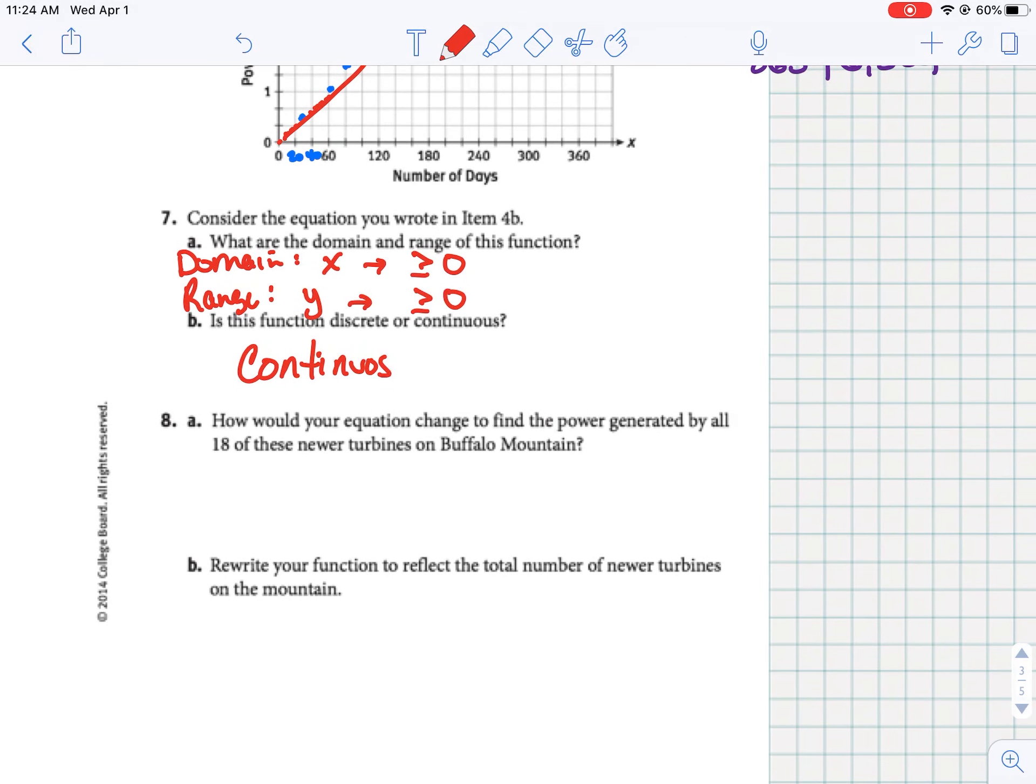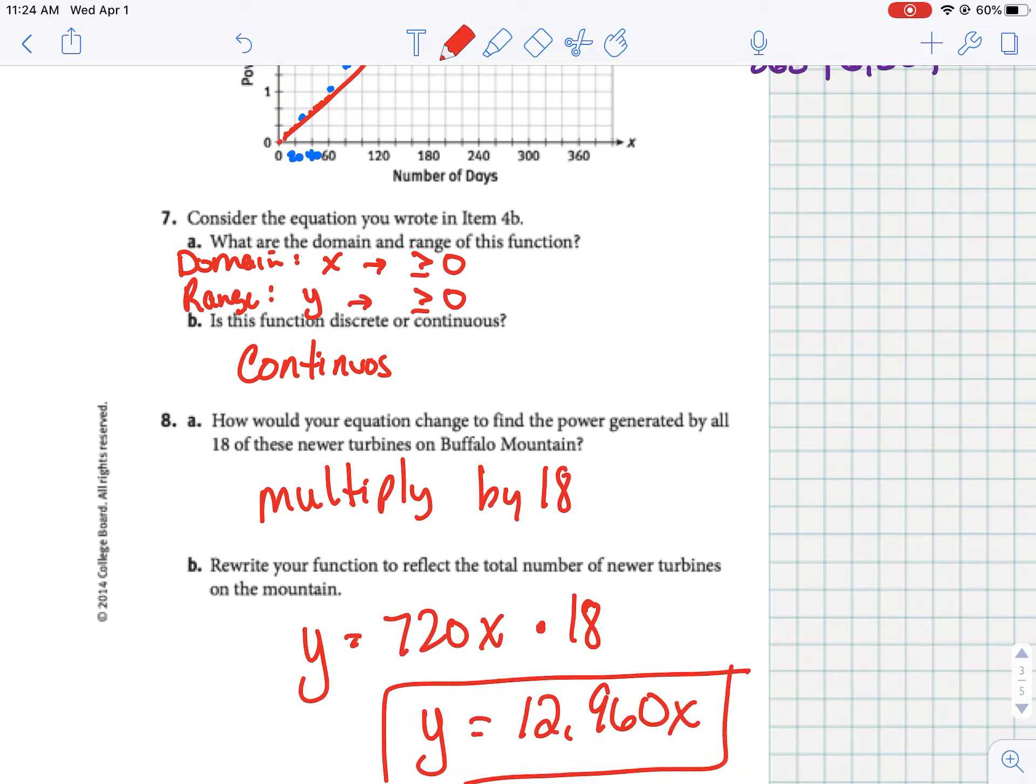All right, so the next one says, how would you use this equation to find the power generated by all 18 turbines? Well, if we know how much generates by one turbine, all we would have to do is multiply by 18. So we're going to take that equation, y equals 720x, and we're going to multiply it by 18. So now it's y equals 12,960x. So that's how much it would be for all 18 turbines.